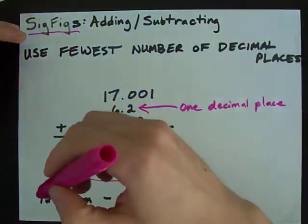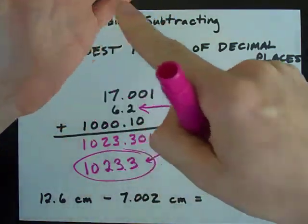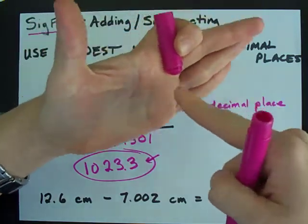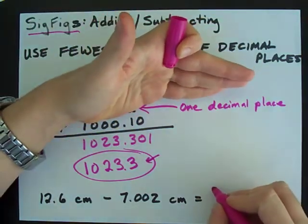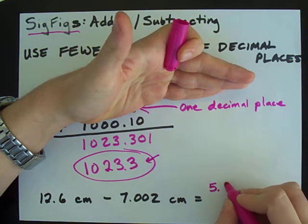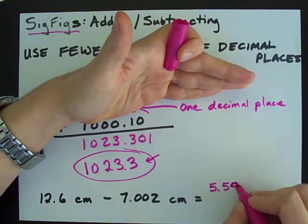Same here. 12.6 minus 7.002. You do that on your calculator and you get 5.598.